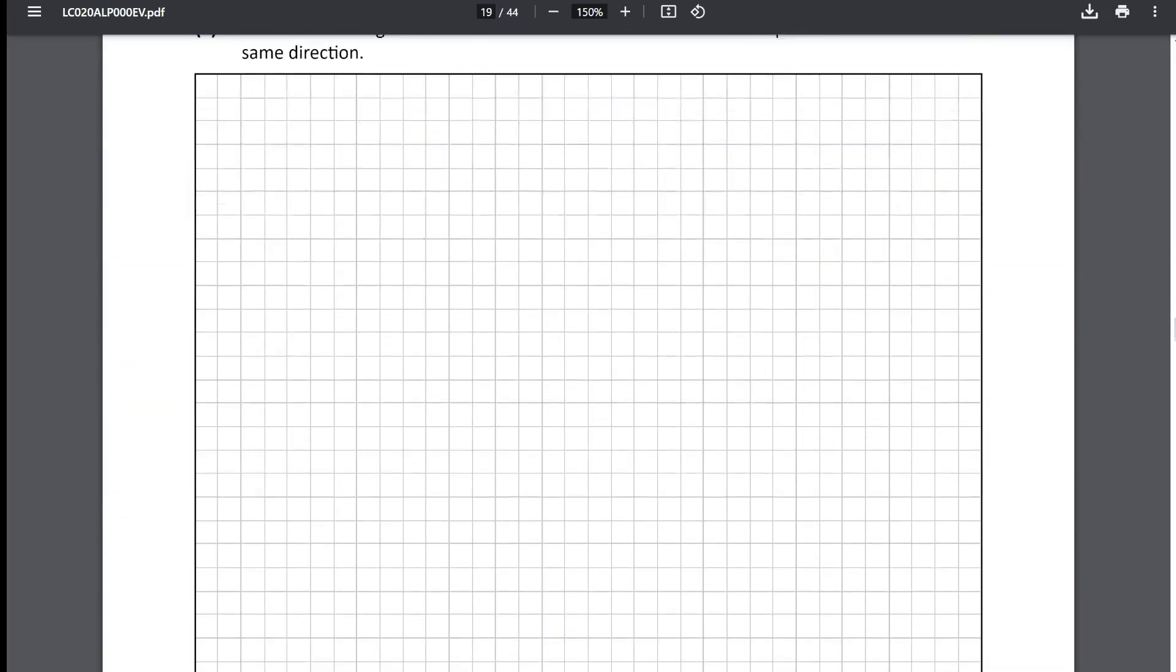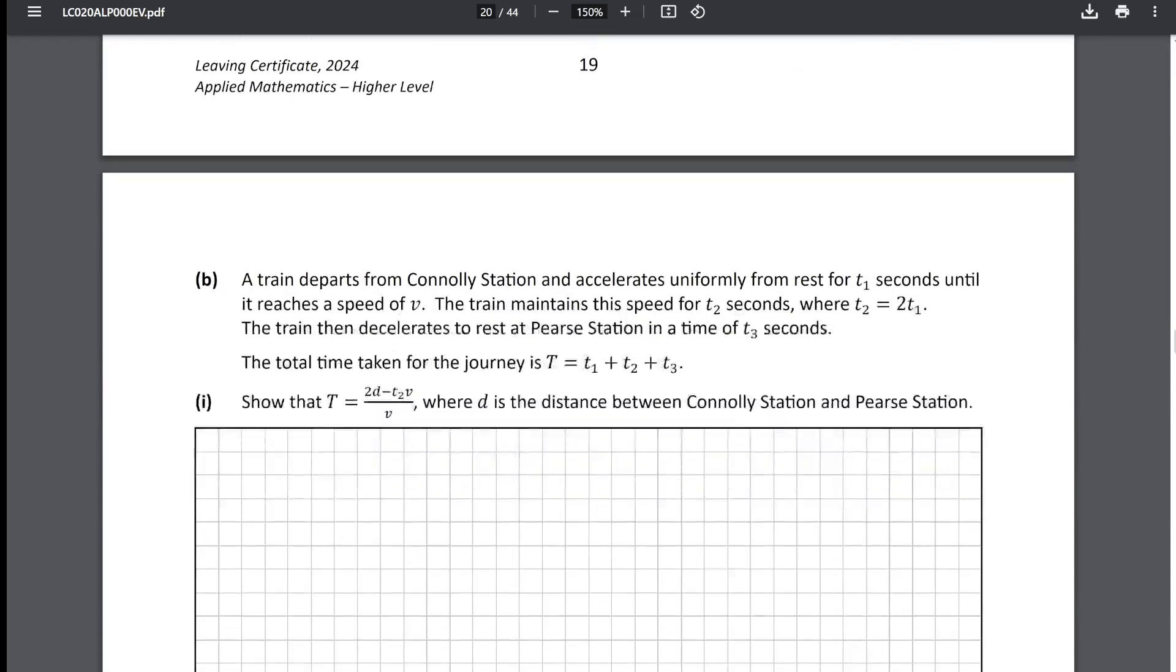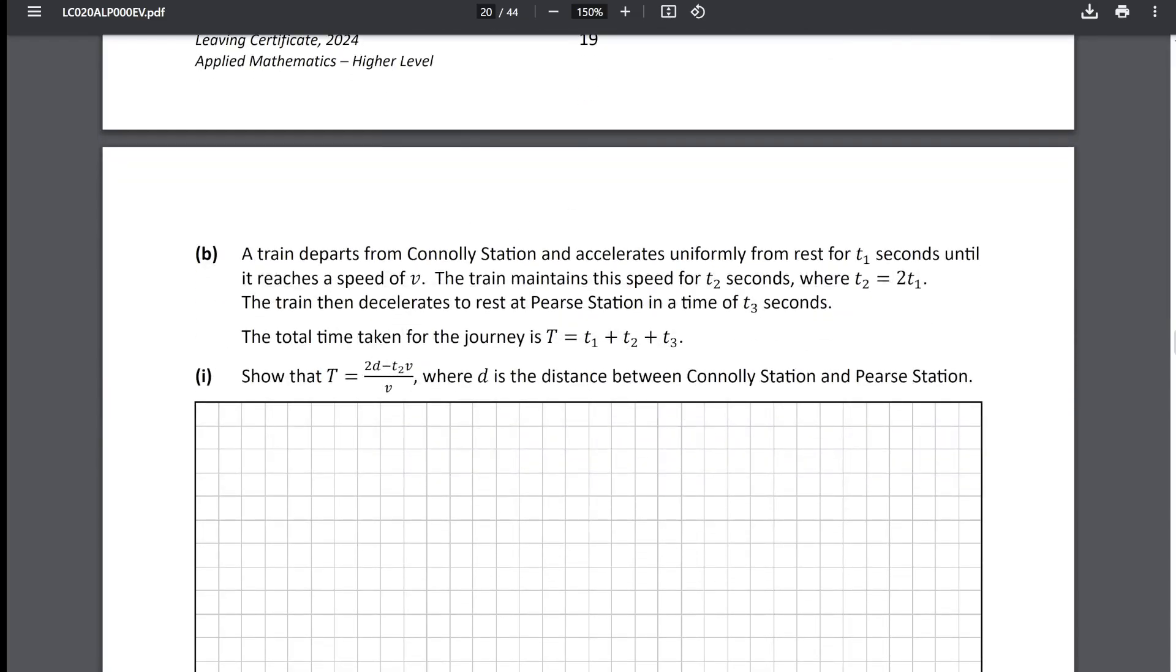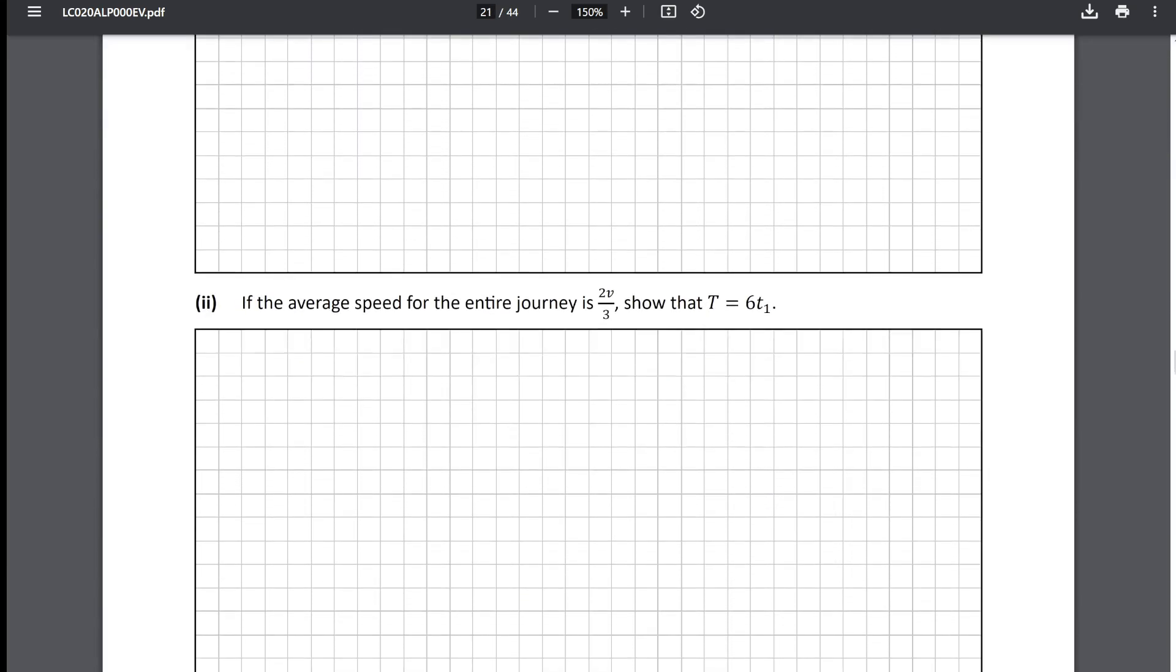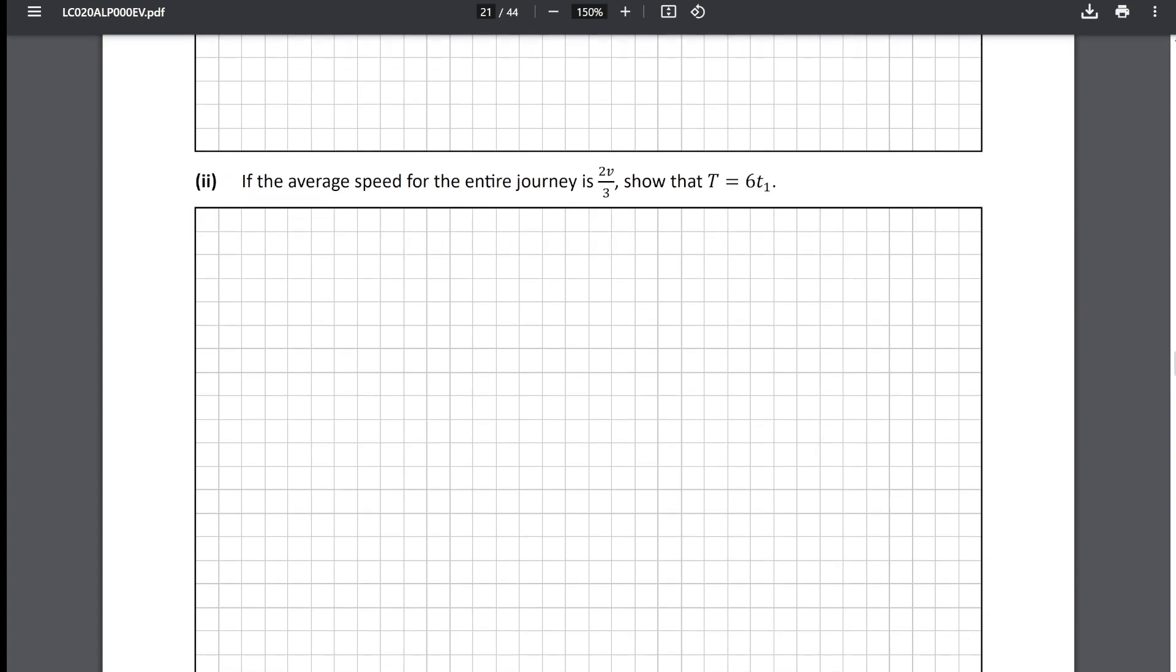Question five, a nice direct collisions question, it's fine enough. And then this utterly ridiculous linear motion question again. This one took me genuinely about 20 minutes to figure out because it required a lot of messing about with the formulas and just spotting this capital T equals 61 relation which is a bit odd.